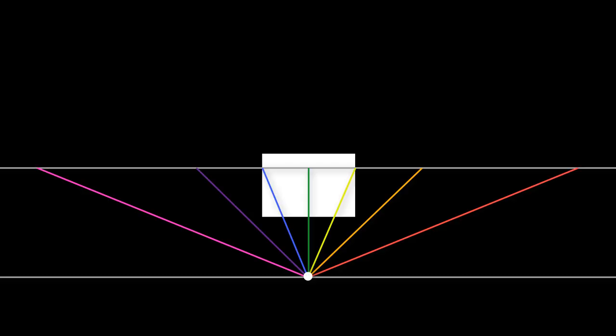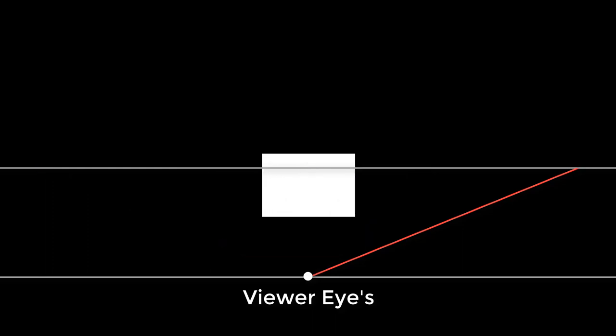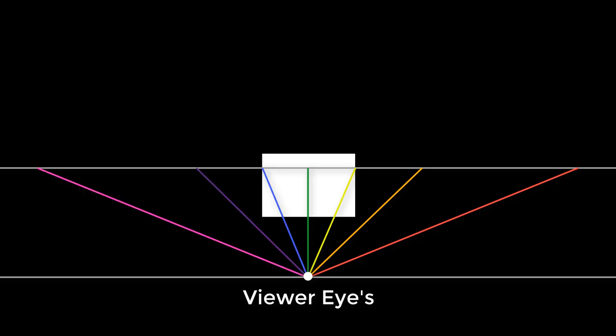You create vanishing points by drawing rays out from your station point. Your station point is where the viewer's eyes are. Each ray coming from your station point will have a vanishing point placed on it where it crosses the horizon line. The angle a ray goes out from your station point's horizontal axis will determine the angle a square rotates away from your viewer horizontally. Here's an example of a vertical square rotated 0 degrees away from the viewer both horizontally and vertically.